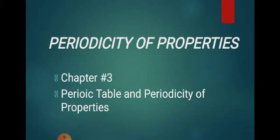Previously, as you know, your exam covered periods and groups. Now we have to start the periodicity of properties, which comes just after periods and groups. This is in chapter number three, titled 'Periodic Table and Periodicity of Properties.'